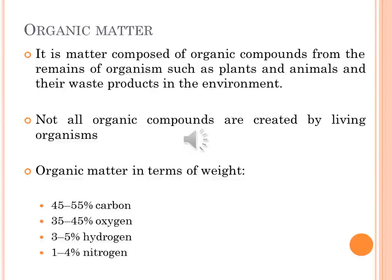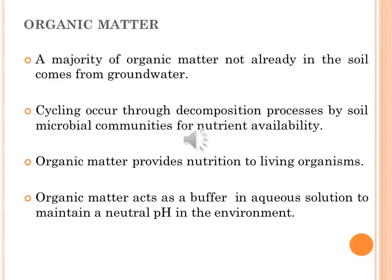Organic matter in terms of weight is 45–55% carbon, 35–45% oxygen, 3–5% hydrogen, and 1–4% nitrogen. A majority of organic matter not already in soil comes from groundwater. When the groundwater saturates the soil or sediment around it, organic matter can freely move between the phases.